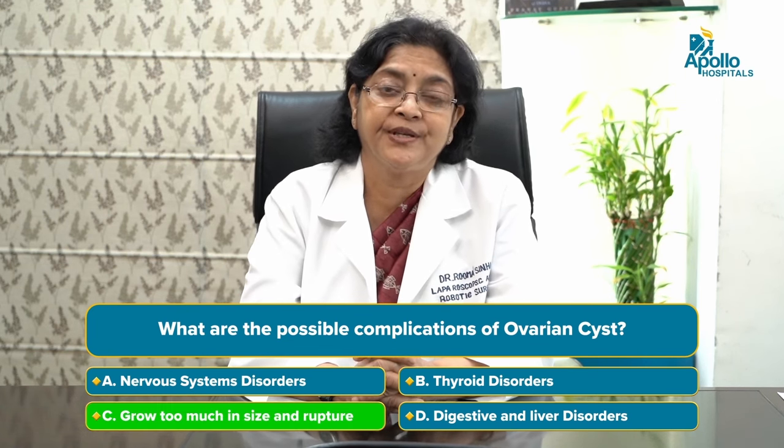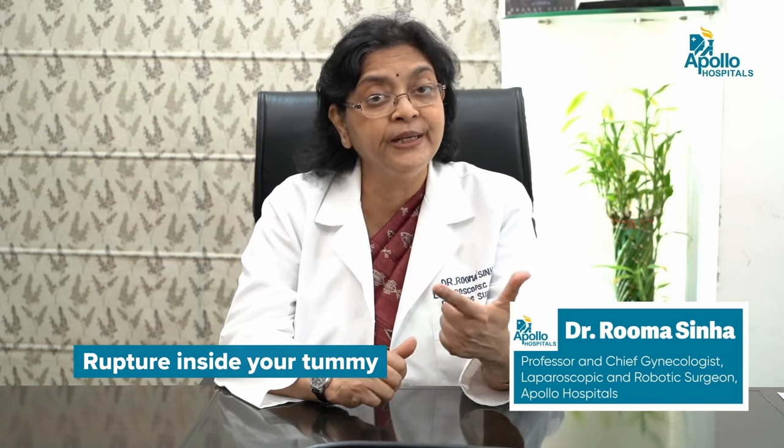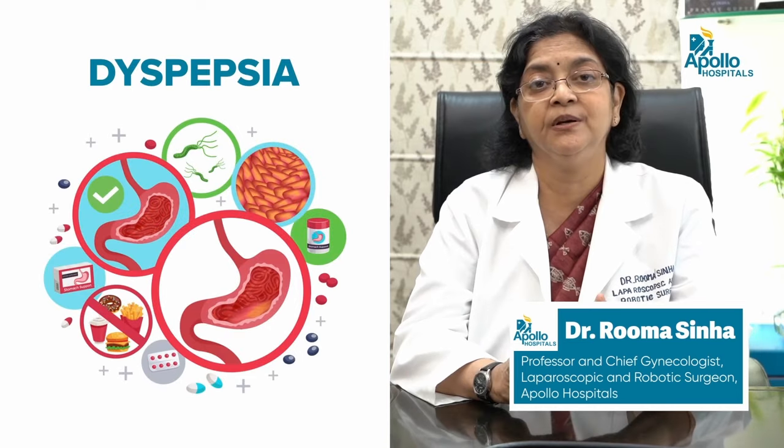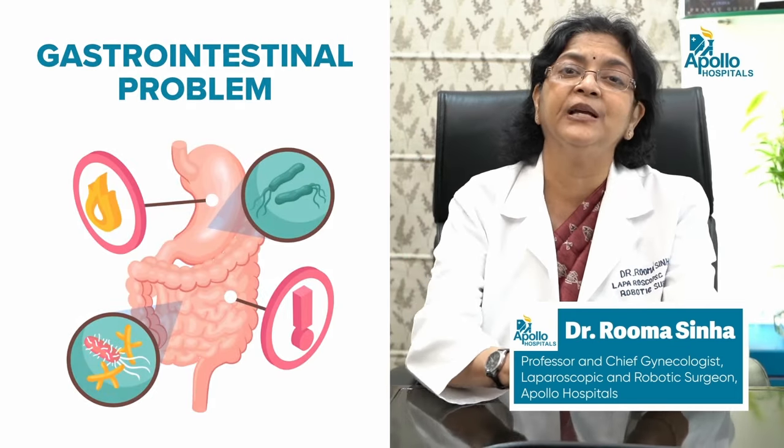The possible complications of ovarian cysts include growing too large causing a mass effect, rupture inside the tummy causing bleeding, torsion causing acute pain, or a cyst initially thought harmless turning cancerous long term. Large asymptomatic cysts can also give rise to non-gynecological symptoms such as dyspepsia, inability to digest, bloating sensation, dull aching pain, and gastric pain. These often suggest a gastrointestinal problem, so women may go to gastroenterology rather than gynecology departments.